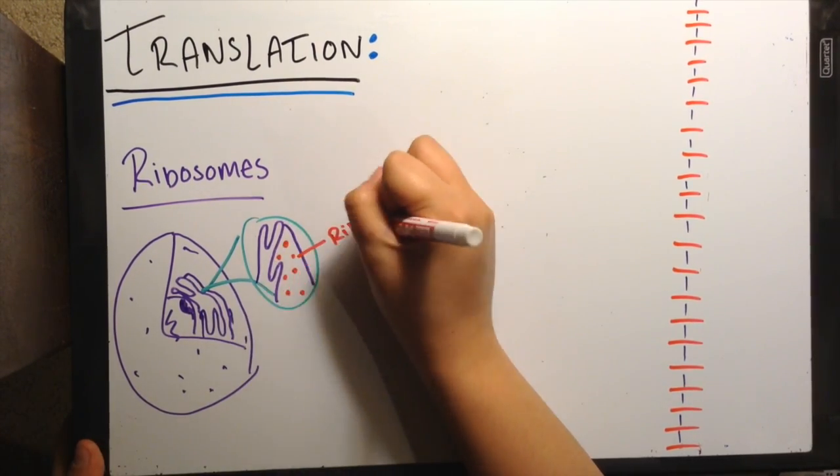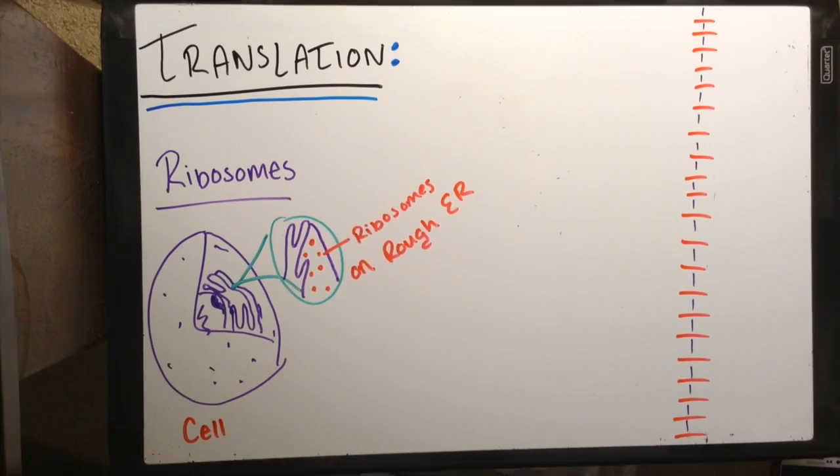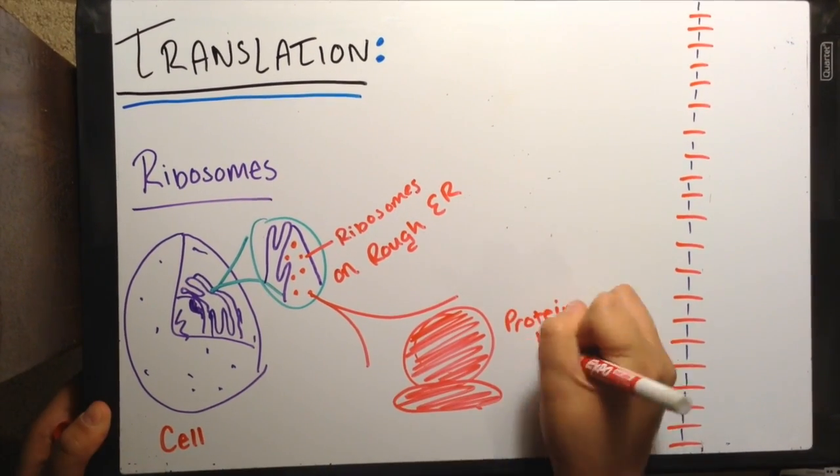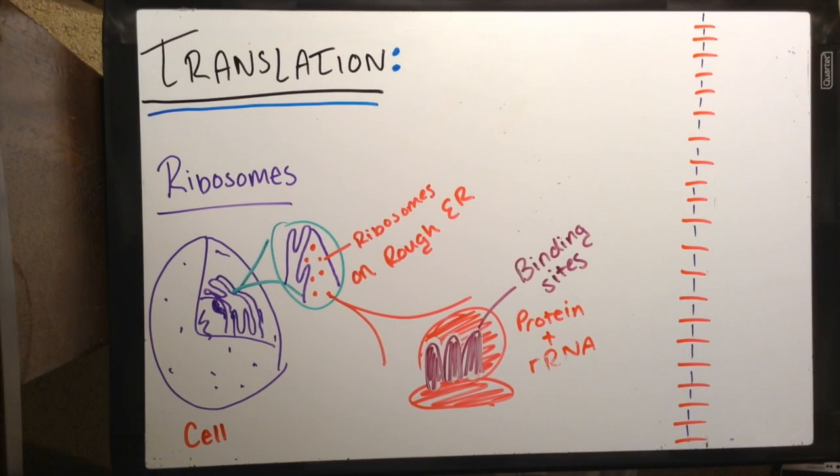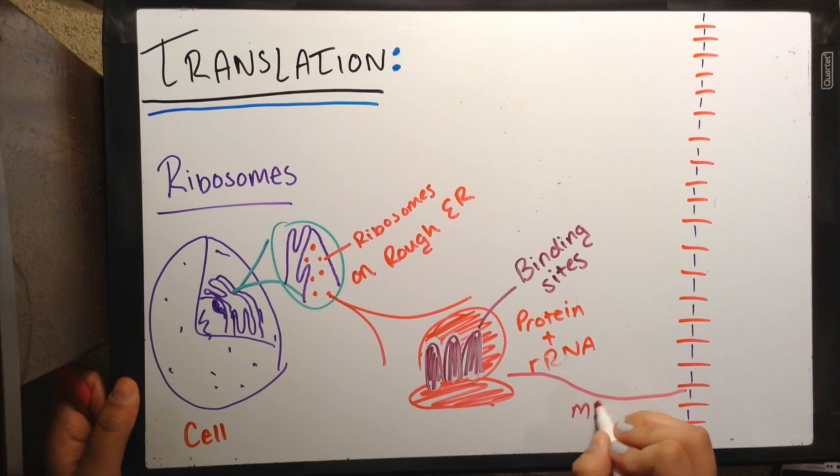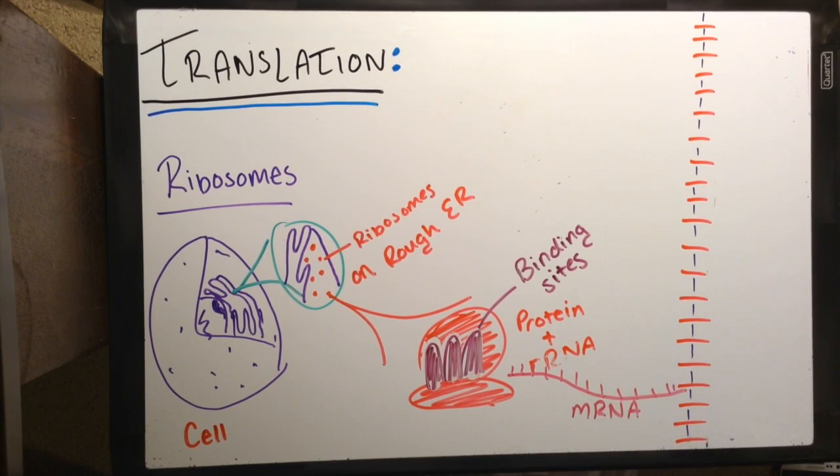They come from the rough endoplasmic reticulum in the cell and are constituted of protein and a different kind of RNA called ribosomal RNA. The RNA has binding sites that allow the mRNA just created in transcription to come in and interact with the tRNA, or transfer RNA.